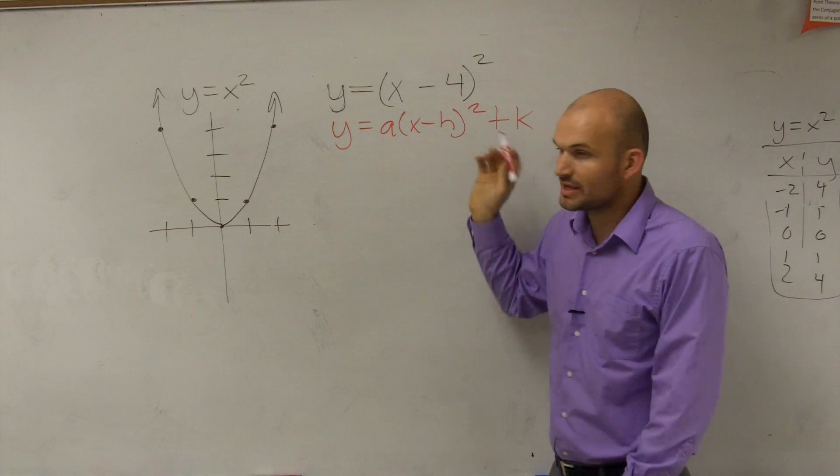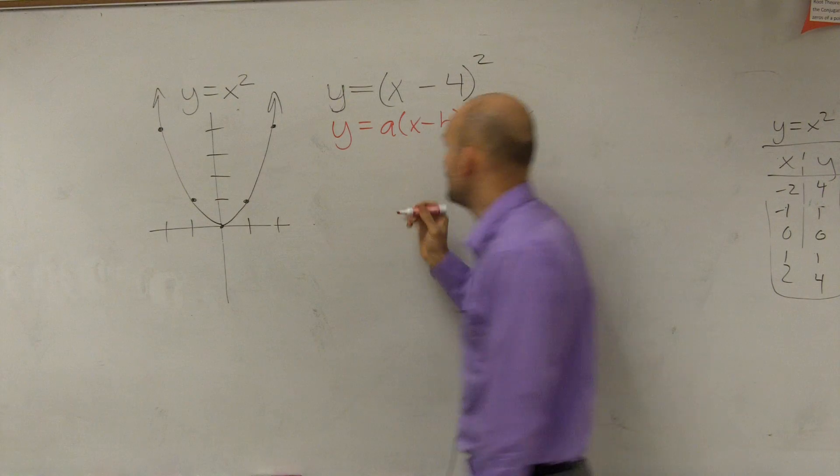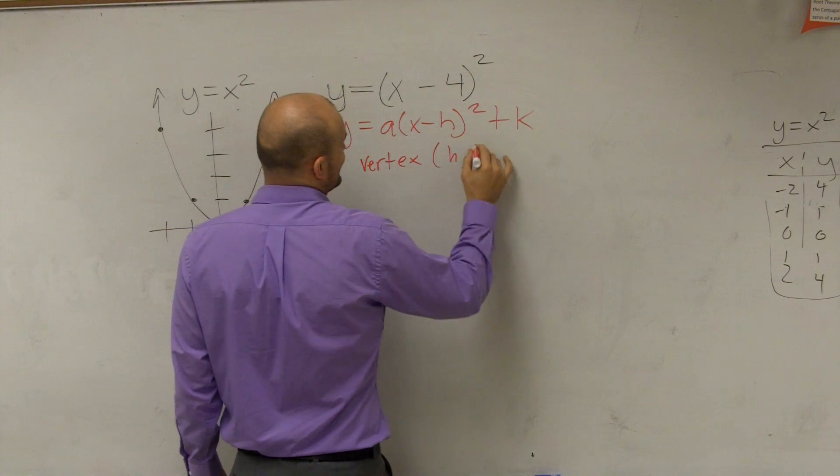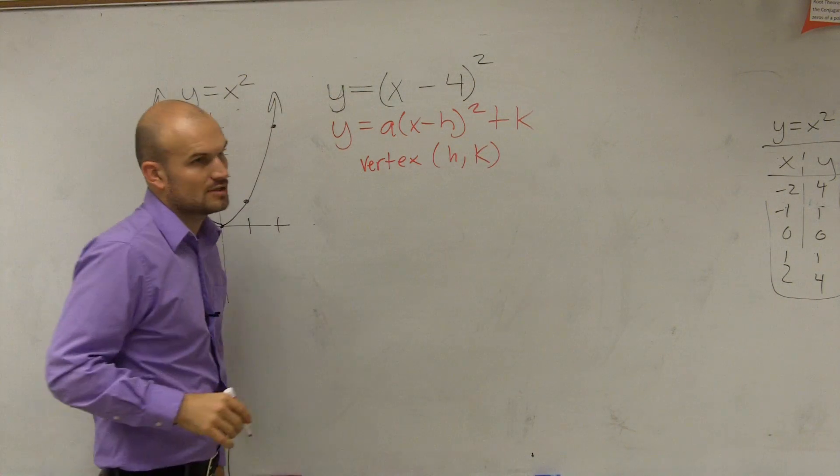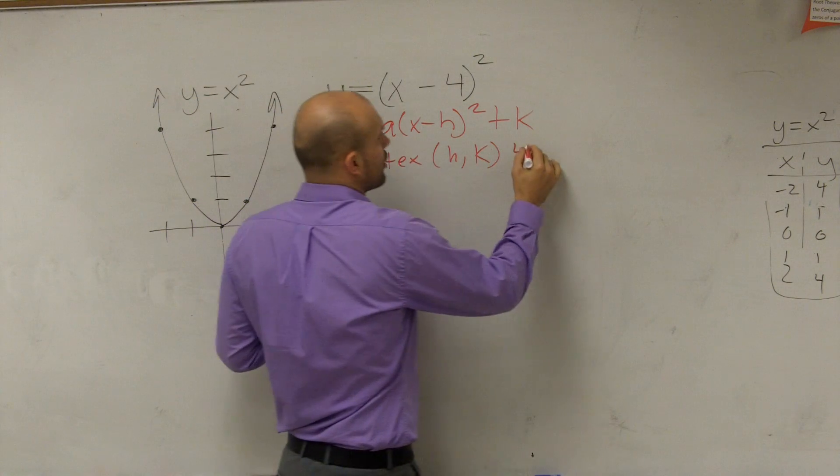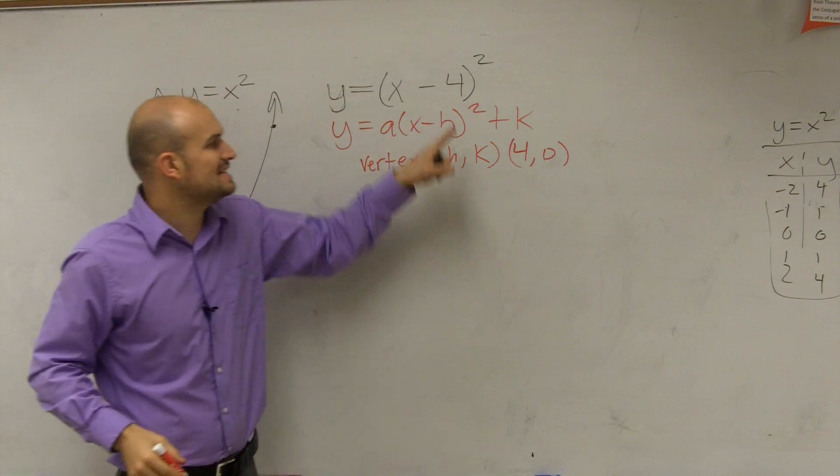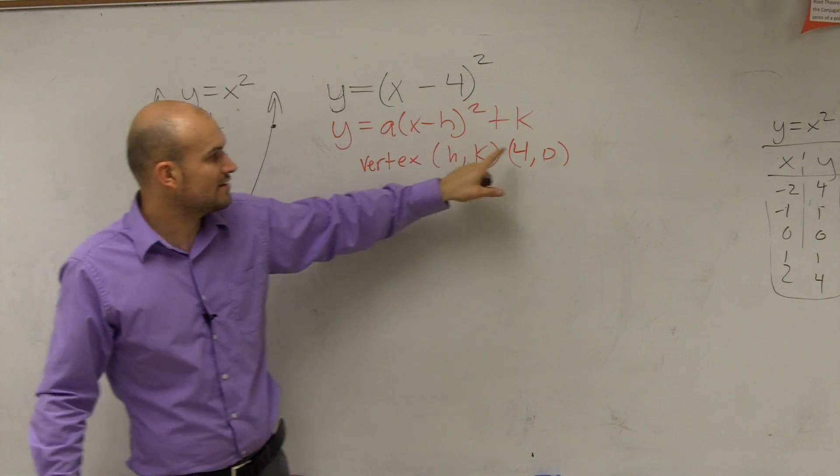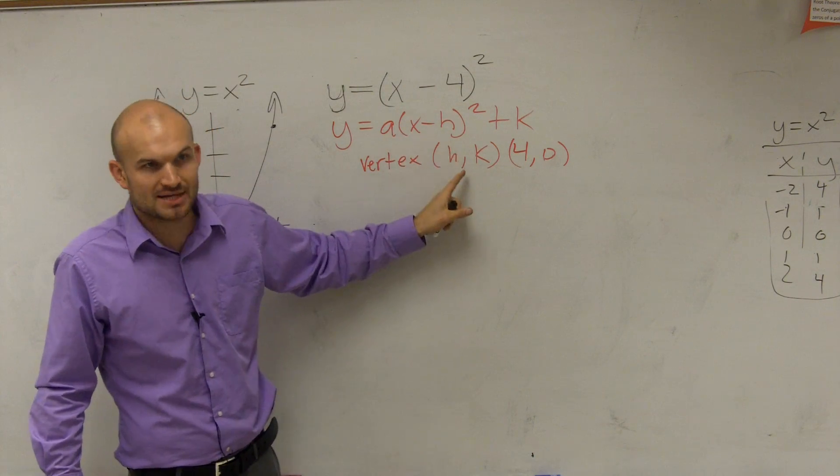Well, remember, if we were going to say the vertex, the vertex is h, k. So h is going to be 4 comma 0, because it's the opposite. It's x opposite of h. So therefore, h is just positive 4.